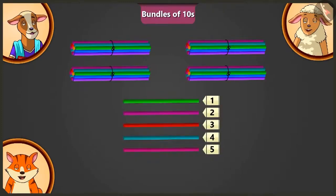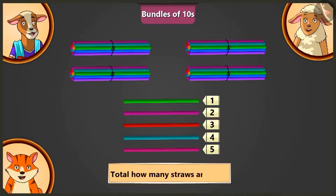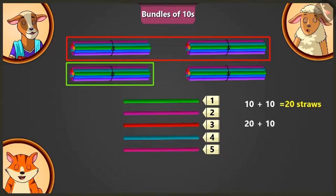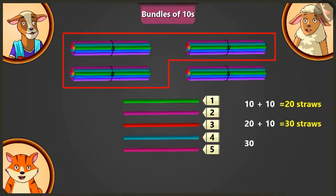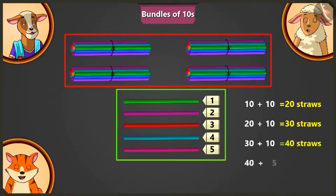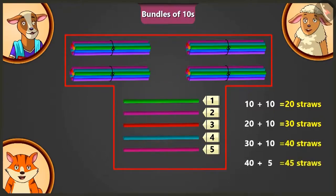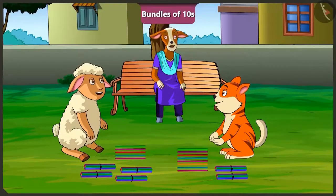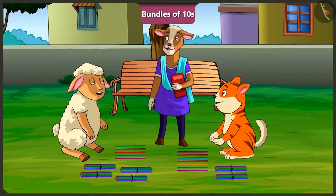Very good, Lily. Now tell me, how many straws are there in total? Adding ten and ten — twenty. Adding ten to twenty — thirty. Adding ten to thirty — forty. Adding five to forty — there are forty-five straws in total. Oh wow! These are all the straws I need. Now you have learned to make bundles of ten, haven't you? Yes, ma'am. Okay, children. Let's meet at school tomorrow. Bye. Bye, ma'am.